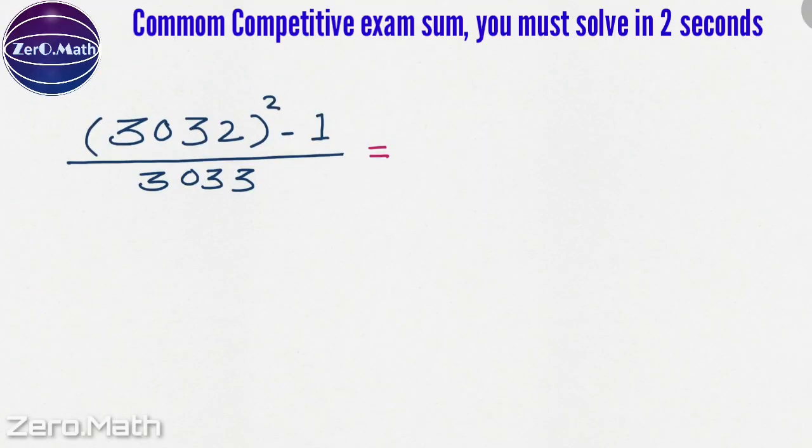Let's first have a look at the numerator of this problem statement: 3032 squared minus 1. Here the crack is the 1 can be represented as 1 squared.